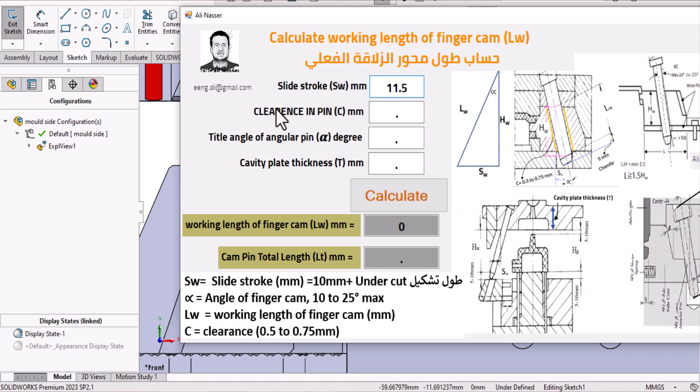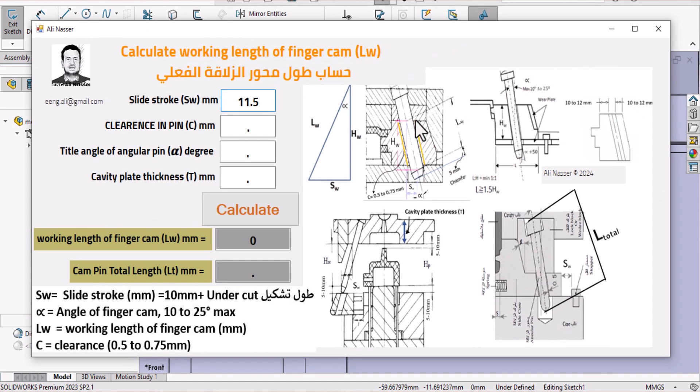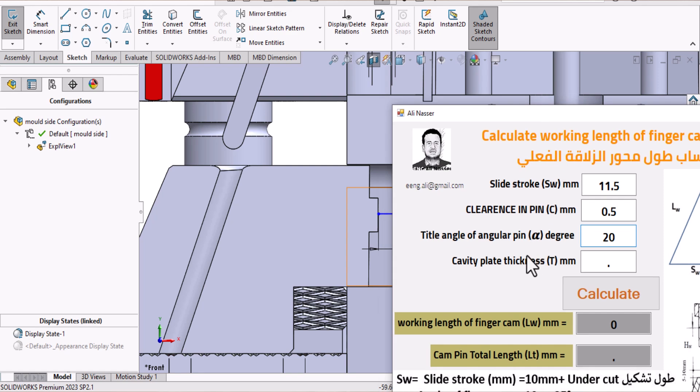Also, the clearance in bin is shown here in orange color, around 0.5 to 0.75, so let's assume 0.5. The tilt angle is between 10 to 25 degrees maximum, so let's assume 20 degrees. Cavity thickness is not important for working length but for total length.